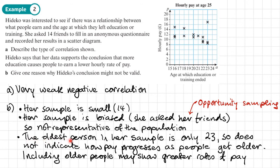And also, the oldest person in the sample or the oldest people in the sample are only 23. There's no one over the age of 23. So it does not indicate how pay progresses as people get older. If we included older people, it may show greater rates of pay.